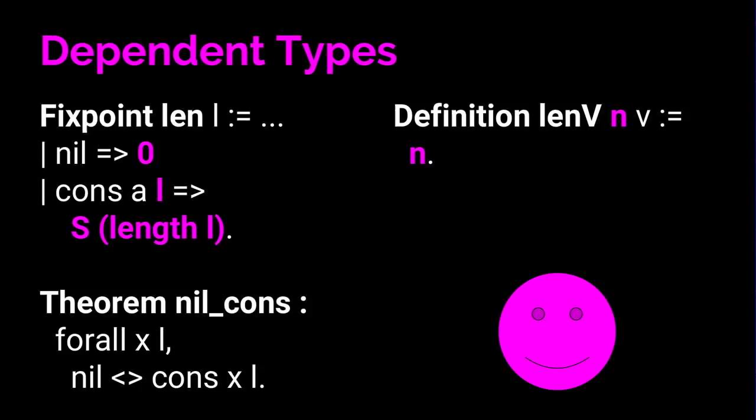And this means that whereas with lists, you have to write this length function yourself, with vectors, whenever you have a vector, you already have a length. So you don't even have to write this function for length. If you did, it would just look like this. In addition to this, this also means that there are a lot of theorems that you have to write about lists that you just never even have to write at all about vectors. So this theorem says that nil and cons are not equal to each other. But over vectors, nil and cons don't even have the same length. So this premise that they're equal will never show up.